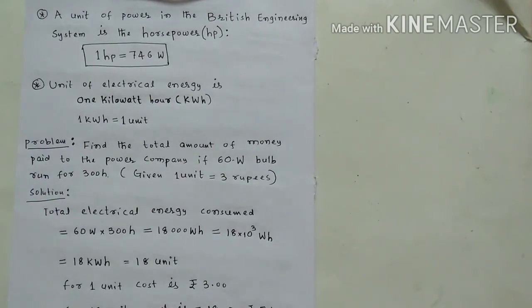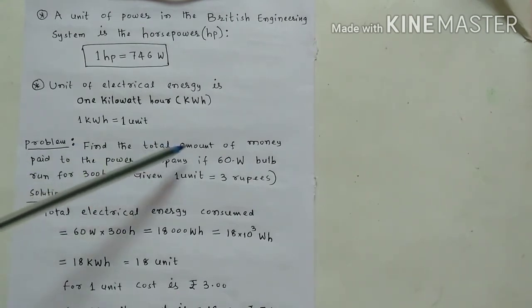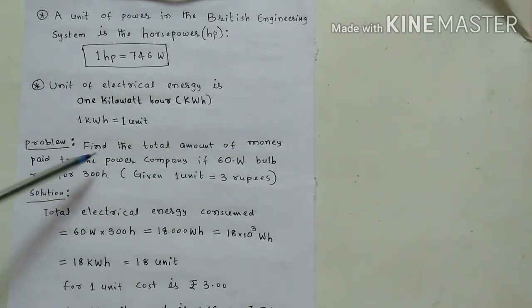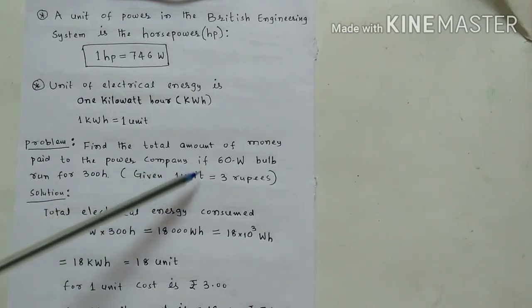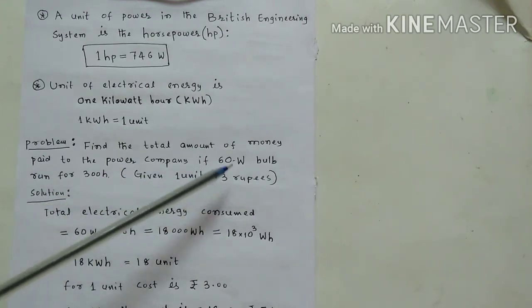In our daily life, we will pay current bill to the power supply company. How we will pay? I will solve one problem. You see here, find the total amount of money paid to the power company if 60 watt bulb run for 300 hours. Given one unit equal to three rupees. Why I choose this problem?